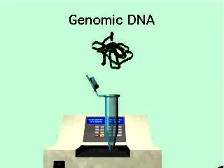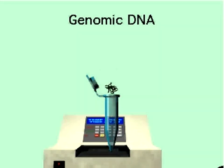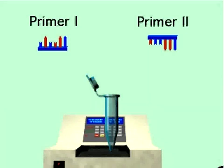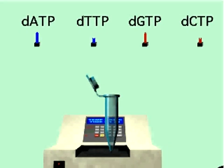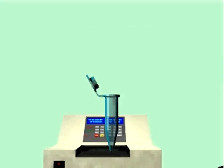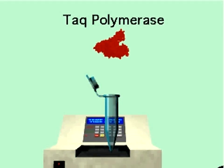A reaction is set up which contains a small amount of genomic DNA, two oligonucleotide primers which hybridize to either side of the region to be amplified, nucleoside triphosphates, the substrates for DNA synthesis, and the heat-resistant DNA polymerase, TAC polymerase.